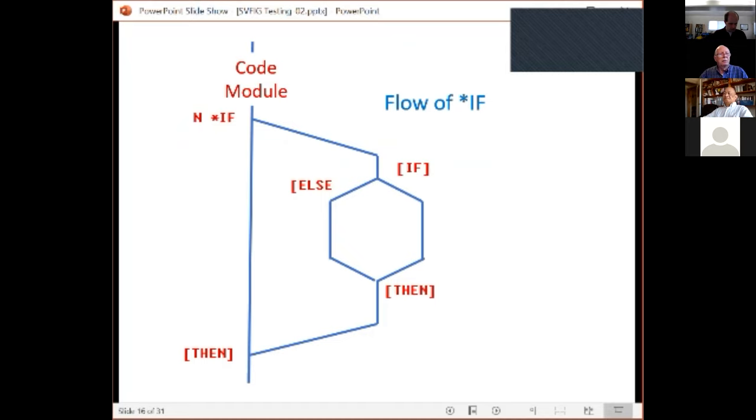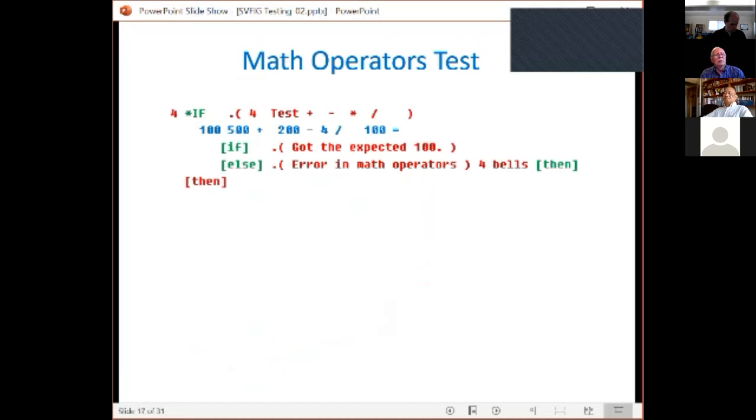It can be a little more involved. The actual test itself can be conditional. In this case, we have a code module we're activating with the star-if, and then inside the test routine there's a couple of choices, so there's an if-then-else in that format. We see here how the operators are being tested. This is test number four, a test of plus, minus, times, and divide. In blue we have a simple set of parameters being tested: the number 100, the number 500, add them together to get 600, number 200, subtract it, we get 400, number four and divide, and the result should be 100.